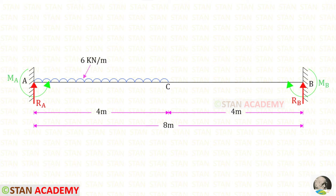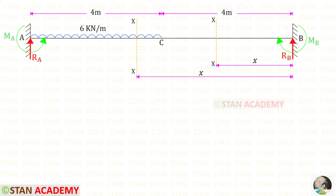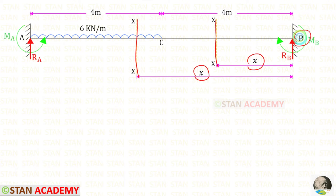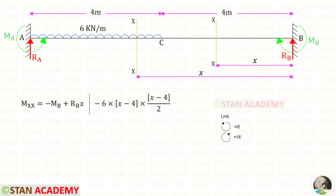In Macaulay's method we have to make sections. In this beam there are two different parts: AC and CB. So we have to make two sections, one in AC and one in CB. I have made both sections at a distance of x from point B, and I am going to find the moments about the sections from point B.